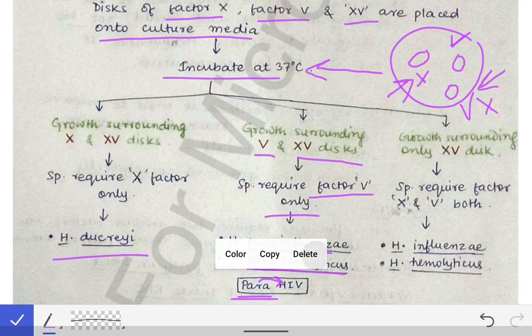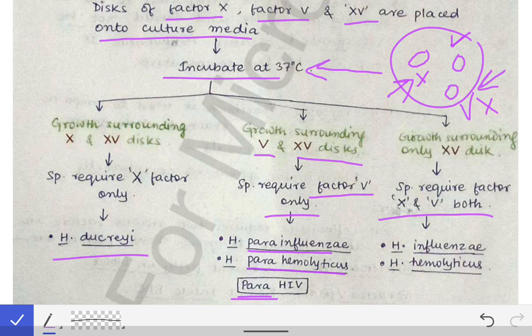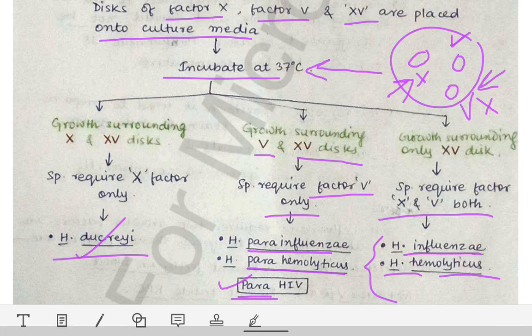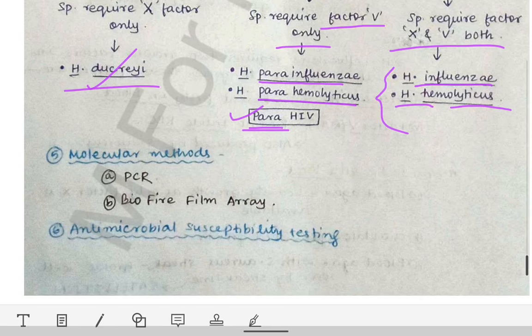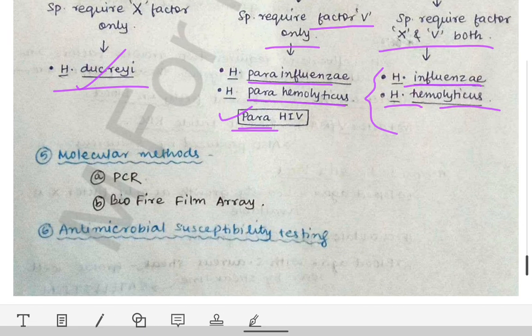Growth surrounding both the Factor X and Factor V discs means the bacteria requires both factors. Those bacteria are Haemophilus influenzae and Haemophilus haemolyticus. So to summarize: Haemophilus ducreyi requires only Factor X; Haemophilus parainfluenzae and parahaemolyticus require only Factor V; and H. influenzae and H. haemolyticus require both Factor X and Factor V.